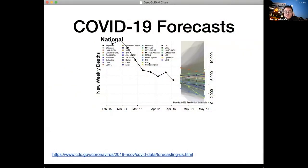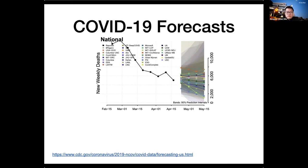Thanks for the introduction. I'm Dongxia Wu. I'm a first-year PhD student, and today I will give a brief talk about my recent research for COVID-19 forecasting. Considering the ongoing pandemic all over the world, it is crucial to have a model that can make trustworthy predictions for governments, companies, universities, and everyone to assess risk and make decisions. We are very proud that our proposed system has been included in the CDC forecasting ensemble. Our team is called UCSD-GT, and we are continuing to submit national and state-level forecasting results every week.